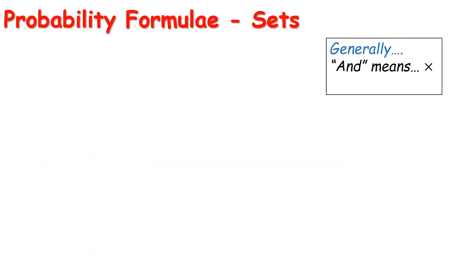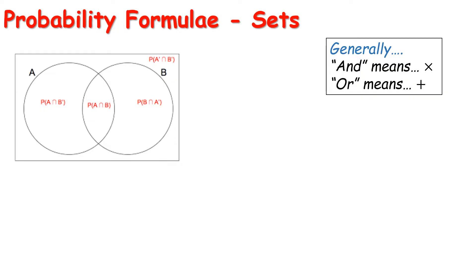The first topic is sets. Generally speaking, 'and' means multiply and 'or' means add. So if I wanted the probability of getting a head and then getting tails when tossing a coin, I would use multiplication. If I wanted the probability of rolling a 2 or getting a 3 on a dice, I would add. That's a very general rule, but it's a good starting point.